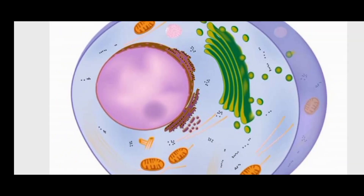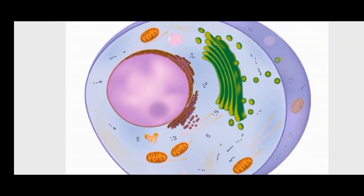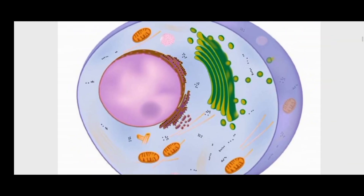Let's see the simple shape of the cell. This is the cell, and you can see the double-membranous DNA and the other structures: mitochondria, ribosomes, and endoplasmic reticulum.